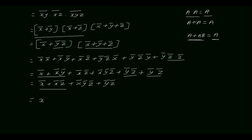Continuing to simplify using a plus ab equal to a: x complement plus x complement z complement equal to x complement, and x complement plus x complement y complement z complement plus y complement z complement simplifies to x complement plus y complement z complement. So f complement equal to x complement plus y complement z complement.